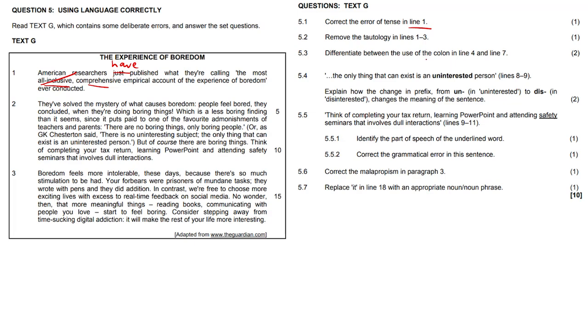5.3, differentiate between the use of colon in line four and line seven. Line four, boom, line seven. So in line four, it indicates that there's going to be some kind of explanation coming. And in line seven, as you guys can see, there are direct quotation marks. So I'm just going to put there DQ, not disqualified, direct quotation.